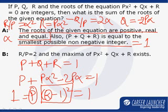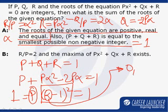If P is 1, then the alpha minus 1 whole square also has to be 1, which can happen only when alpha is either 0 or 2.